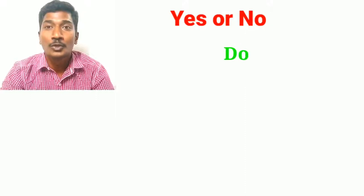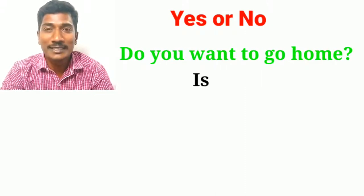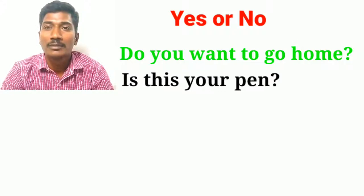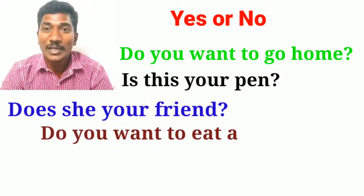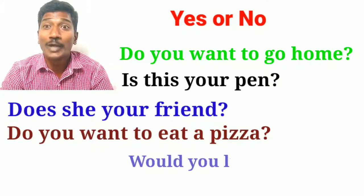When we look at yes-or-no type questions, they begin with auxiliaries. For example: Do you want to go home? Is this your pen? Does she your friend? Do you want to eat a pizza? Would you like to take a piece of biscuit? Interrogative sentences ask questions. As I said, there are two types in interrogative: one is wh-questions and another one is yes-or-no type. I hope that's clear for you. Let's move on to imperative sentences.